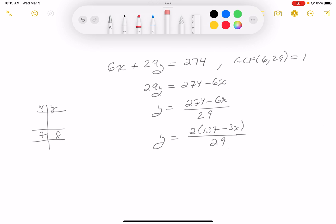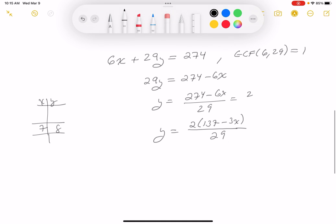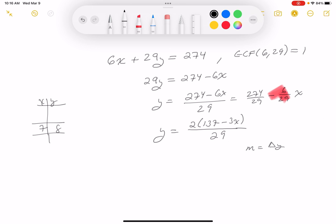What I'm going to do is put the slope down. So what's the slope going to be? Let's write this over here. y equals 274 over 29 minus 6 over 29x. The only thing I'm looking at is this thing here now. That's the slope, which means delta y is minus 6, delta x is 29.